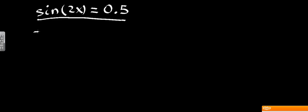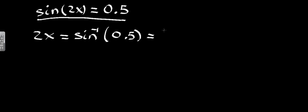We're going to start as per usual by using the calculator. We're going to say that 2x is equal to the inverse sine of 0.5. Using the calculator, this is going to give us 30 degrees, which means that x is equal to 15 degrees, 30 divided by 2.